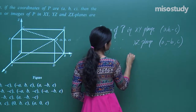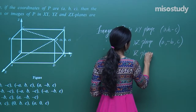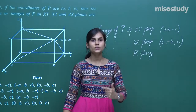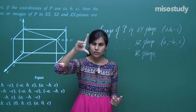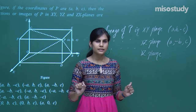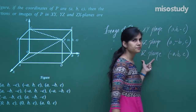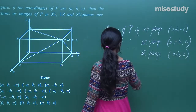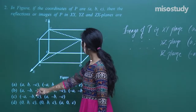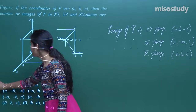For the image along the yz plane, only the x coordinate changes. If it is two units along the x axis, then the image is minus two units along x. So along the yz plane the image is (-a, b, c). To summarize: xy plane gives (a, b, -c), yz plane gives (-a, b, c), and xz plane gives (a, -b, c). This is the correct option.